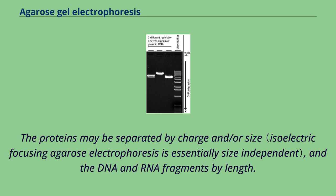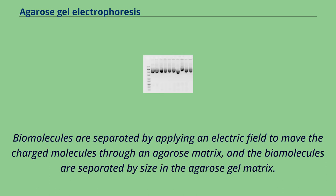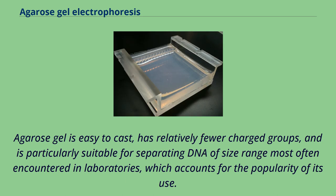Proteins may be separated by charge and/or size, and DNA and RNA fragments by length. Biomolecules are separated by applying an electric field to move the charged molecules through an agarose matrix. Agarose gel is easy to cast, has relatively fewer charged groups, and is particularly suitable for separating DNA of size ranges most often encountered in laboratories.